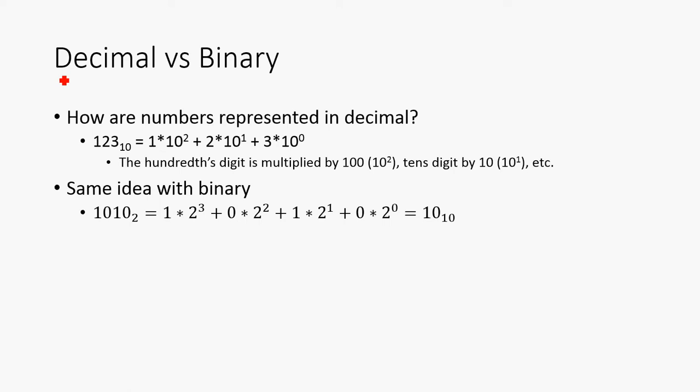So first we're going to talk about decimal numbers versus binary numbers. First we have to discuss how numbers are represented in decimal. Take for instance the number 123. We say that this is simply 1 times 100, plus 2 times 10, plus 3 times 10 to the 0, which is 1. So the hundredths digit is multiplied by 100, which is 10 squared, tens digit by 10, which is 10 to the 1, and so on.